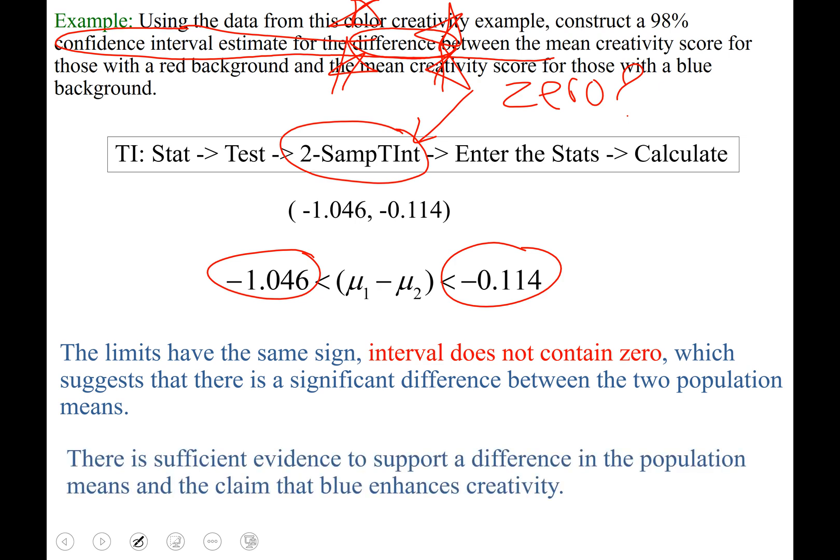Let's write that down nicer. The limits have the same sign. Interval does not contain 0, which suggests that there is significant difference between the two populations' means. If the interval did contain 0, then there could be no difference, because 0 represents no difference. So there is sufficient evidence to support the claim that blue enhances creativity.